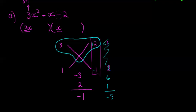That means I've got 3x plus 2, and here I have 1x minus 1. So 3x plus 2 and 1x minus 1. In the next video I'll do another example.